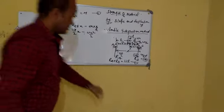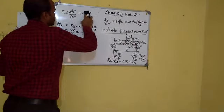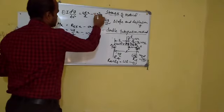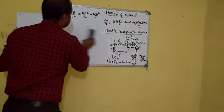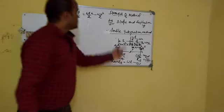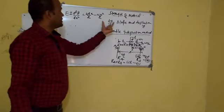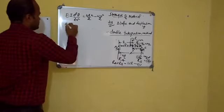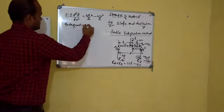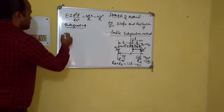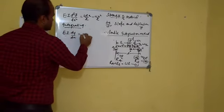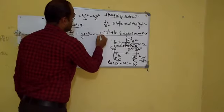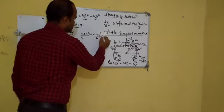For finding slope, we integrate the standard equation EI d²y/dx² = M one time. Integrating, EI dy/dx = WLx²/4 minus Wx³/6 plus C1.